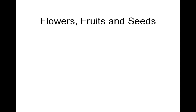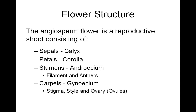Now let's take a look at flowers, fruits, and seeds. The angiosperm flower is the reproductive shoot consisting of the sepals — a ring of sepals is known as the calyx — and petals — a ring of petals is known as the corolla — and stamens, made up of the filament and anther.